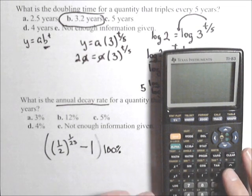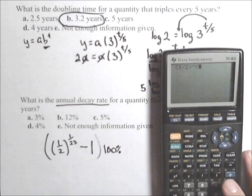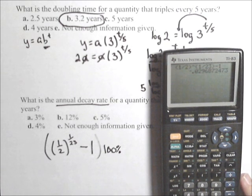So, let's see how this will look. We have one half raised to, and this is important, the one divided by 23 needs to go in parentheses. We're going to subtract off the one, and then multiply by 100%.